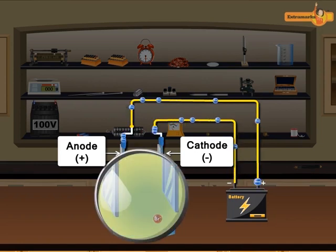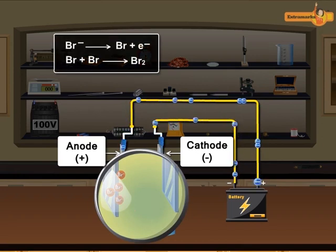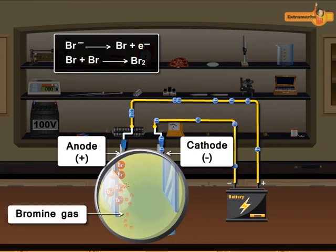Negatively charged bromide ions move towards the anode, which is the positive electrode, where oxidation takes place. Bromide ions lose an electron to become bromine atoms, and two such atoms combine to release bromine gas.